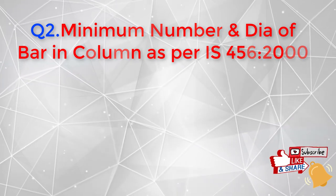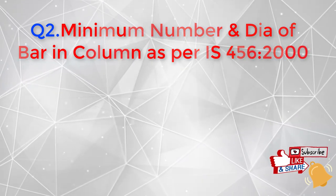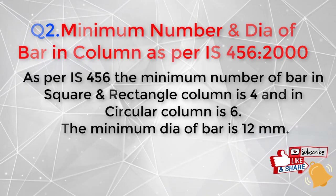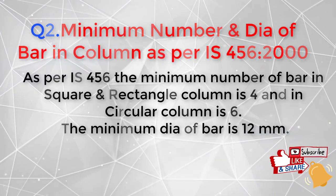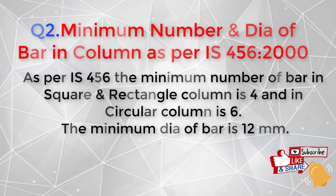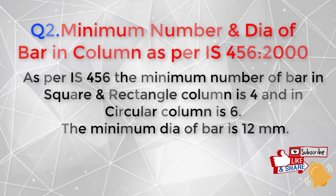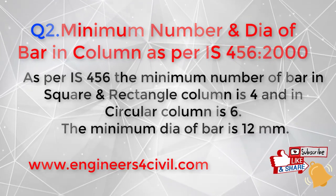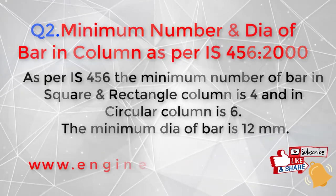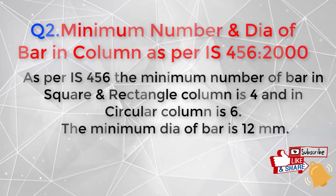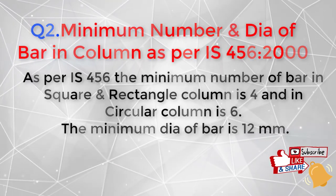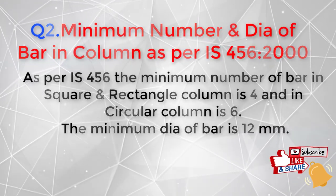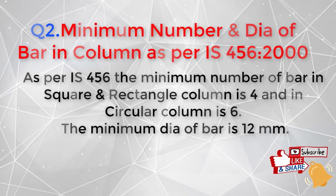The second question is: what is the minimum number of bars and diameter used in a column? As per IS 456, in rectangular and square columns we use four bars, and in circular columns we use six bars. The minimum diameter of the bar is 12 mm. Remember: four bars for rectangular and square columns, six bars for circular columns.